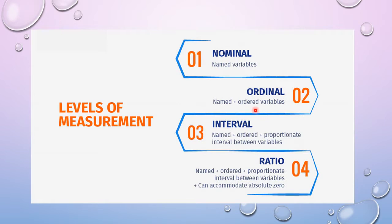The third step is interval. In the interval, you can see there's name, order, and a new addition: proportionate interval between variables. The fourth step is ratio, which has all three characteristics plus it can accommodate absolute true zero. There are some similarities between interval and ratio, but these two are different in the absolute zero.